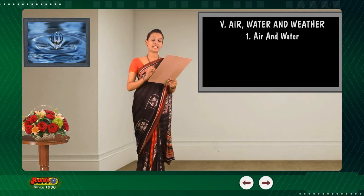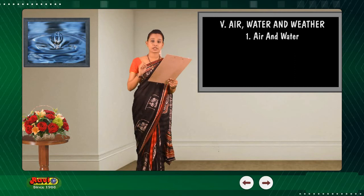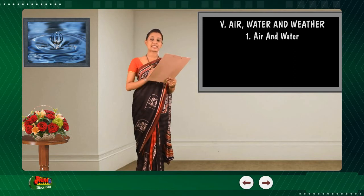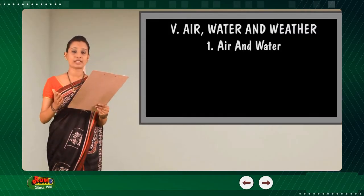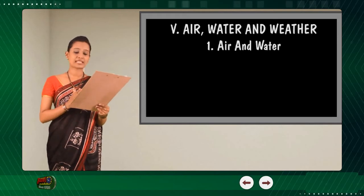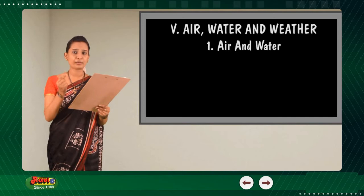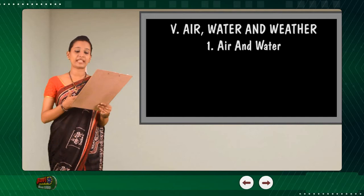Air is a precious resource that all of us take for granted and is important for almost all life on earth. Air supplies oxygen to us and many animals, which is essential for our bodies to live. Without air, we would survive only for a few minutes. Plants need other gases from the air to perform photosynthesis.